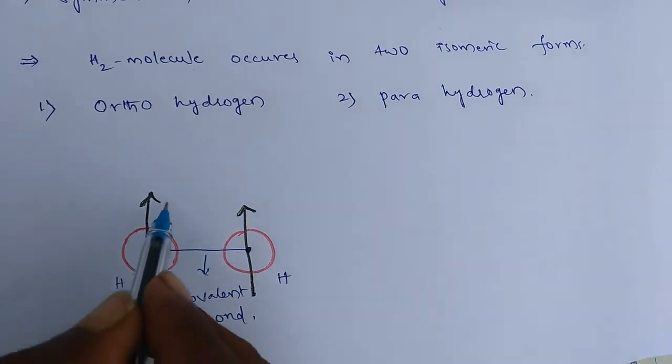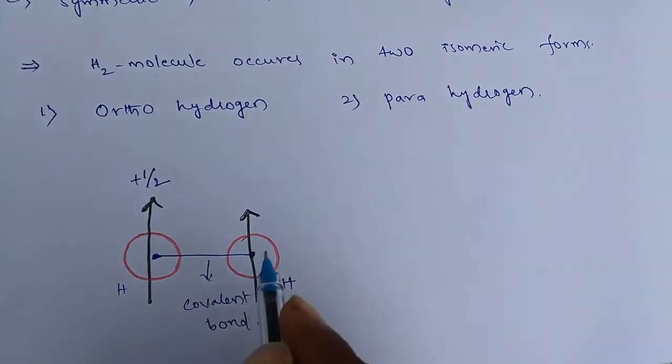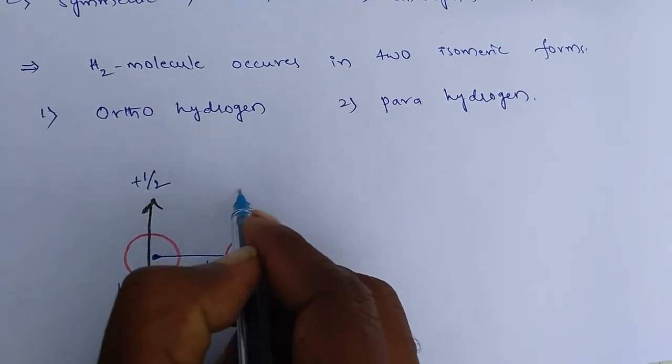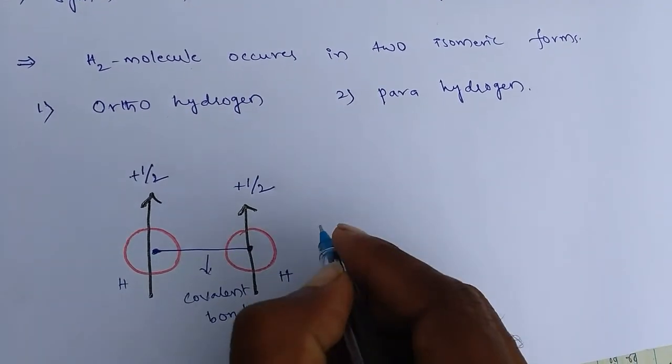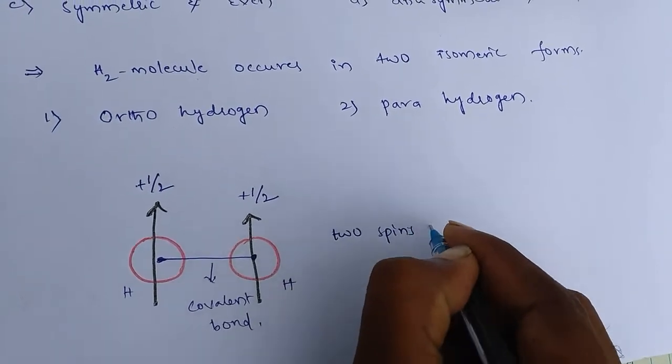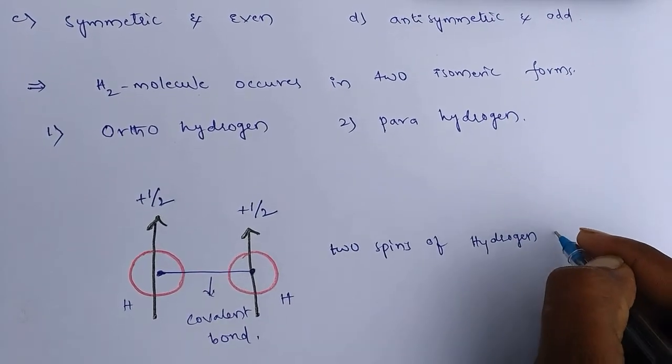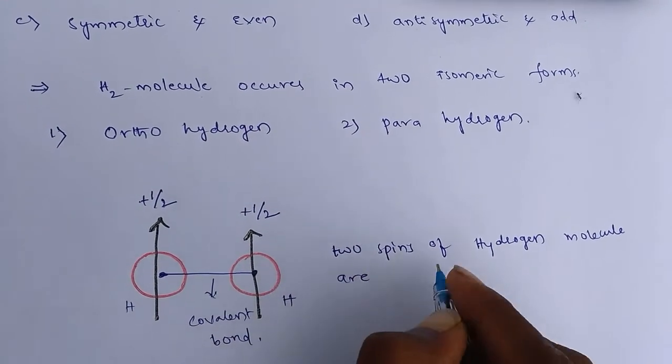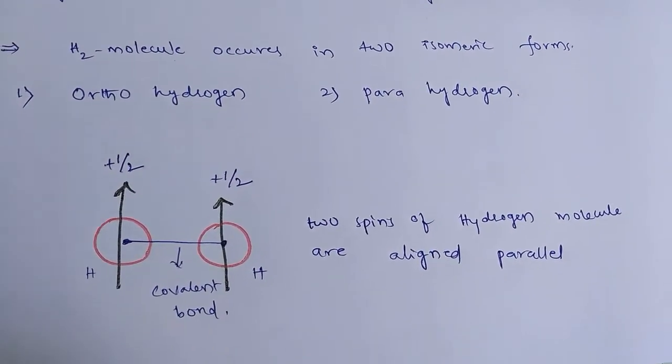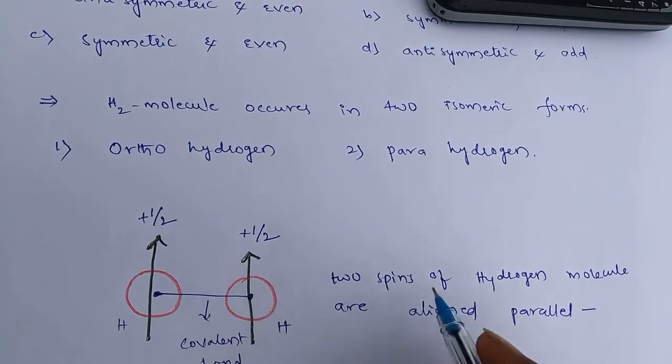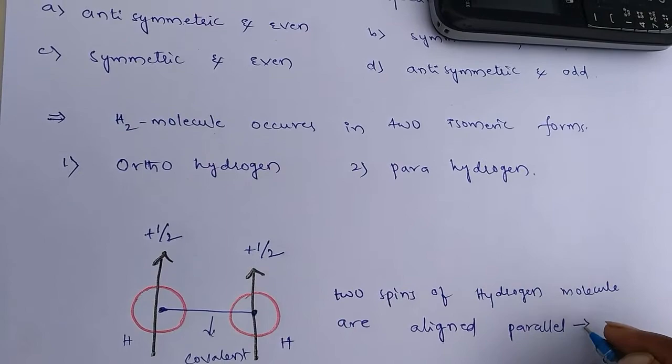If you consider this hydrogen has spin, so that is plus half, and another hydrogen has spin, so that is having plus half. So these two are same side, means these two spins of hydrogen molecule are aligned parallel. So when two spins of hydrogen molecule are aligned parallel, then that isomer is simply called ortho-hydrogen.